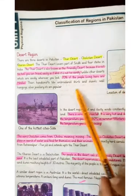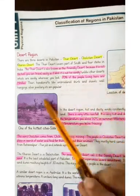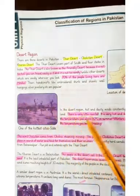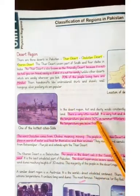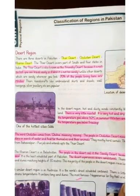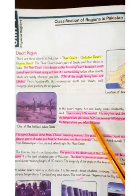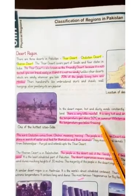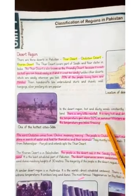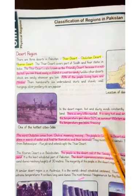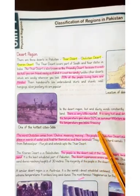70% of the people living in the Thar desert are Hindus. There is very little rainfall. It is very hot and dry — in some parts the temperature is above 50 degrees Celsius in summer. Winters are very cold and the temperature goes below freezing.